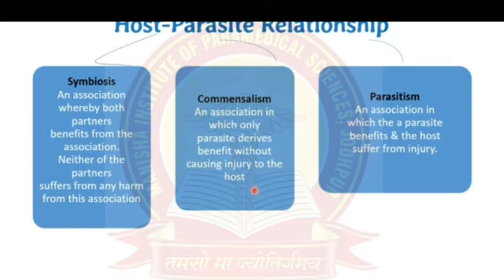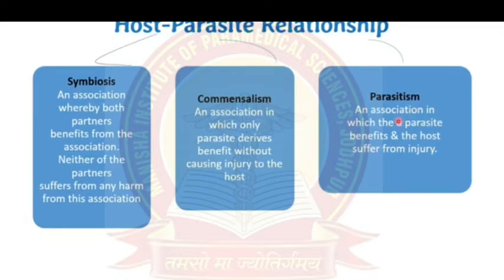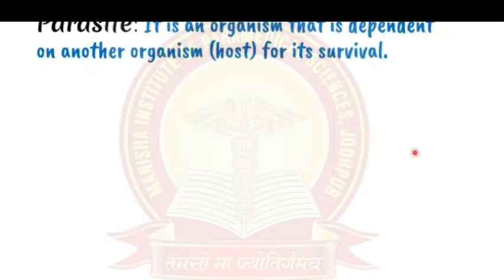An example of commensalism is Entamoeba coli, a parasite that remains in our intestine but does not cause infection — it simply survives there. The third type is parasitism, the most important in medical parasitology: an association in which the parasite benefits and the host suffers injury.